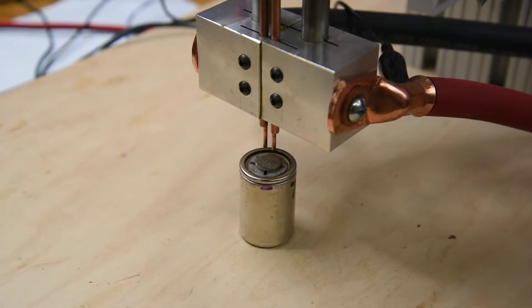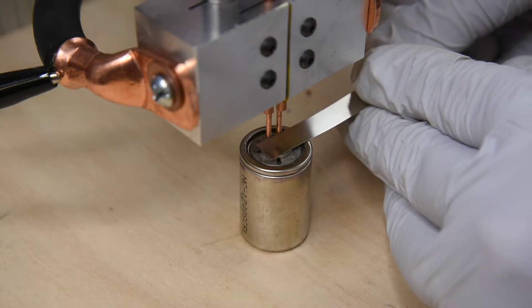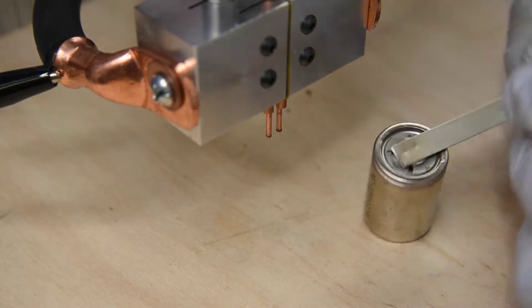Since doing the 0.1mm thick nickel test, I've changed the welder leads to 1-aught gauge. That seemed to move me from about 60% energy going to the tips up to about 75%.